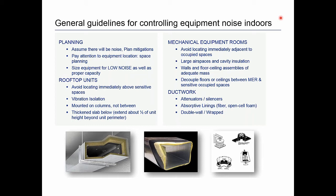For mechanical equipment rooms — having all large noise-making equipment inside the building — again avoid locating those rooms near occupied spaces. Use large air spaces and cavity insulation in the walls, ceilings, and floors surrounding the equipment room. Make sure your wall and floor-ceiling assemblies have a lot of mass to break that path, and decouple the floors and ceilings between a mechanical equipment room and any sensitive occupied spaces. Pay a lot of attention to your ductwork: use attenuators and silencers if necessary, use absorptive linings along the main duct path, and if you have breakout noise issues from thinner-gauge ductwork, there are products available to wrap the ductwork and absorb and block the sound.